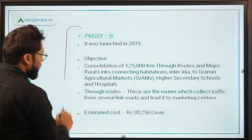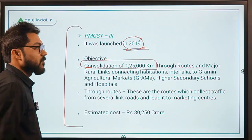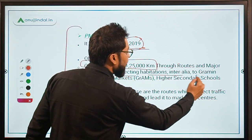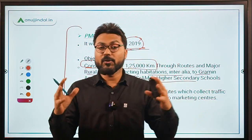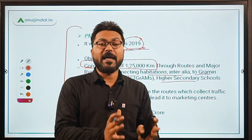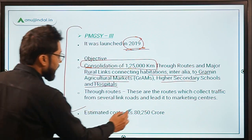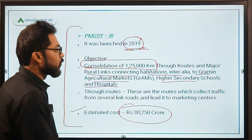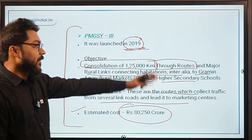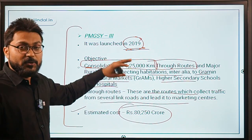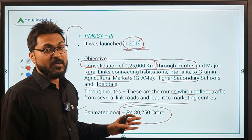PMGSY Part 3 was launched in the year 2019 with an overall objective of consolidation of 1,25,000 kilometers of through routes and major rural links connecting habitations to Grameen Agricultural Markets, higher secondary schools, and hospitals. Through routes are routes which collect traffic from several link roads. The estimated cost of PMGSY-3 was Rs. 80,250 crores.